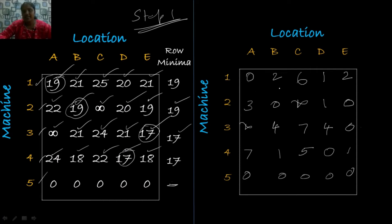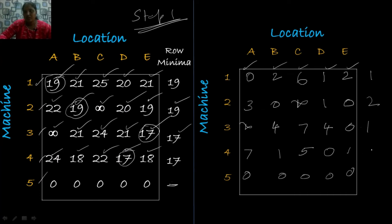Now we count the number of zeros in each row: row 1 has one zero, row 2 has two zeros, row 3 has one zero, row 4 has one zero, and row 5 (dummy) has five zeros. We start assignments with rows having fewer zeros. We begin with row 1, then row 3, then row 2, then row 4 — since rows 1, 3, and 4 each have only one zero.